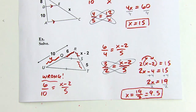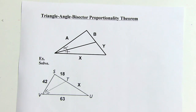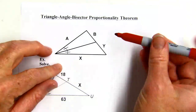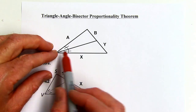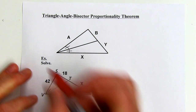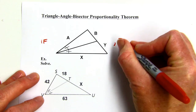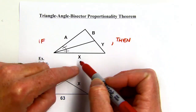On the next page we have another proportionality theorem: the triangle angle bisector proportionality theorem. When a triangle has an angle bisector drawn in — indicated by two congruent angles — then the sides are in proportion: a is to b as x is to y.